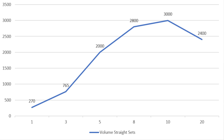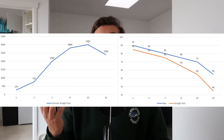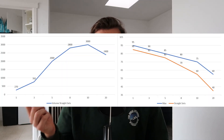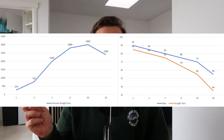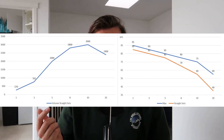A couple of things you notice right away from this graph: volume actually increases going from singles to triples to fives to eights to tens, and then decreases afterwards. Also notice the massive difference in volume between triples and sets of five. To really understand rep ranges you have to take a look at both graphs side by side, and if you do so a few things from my previous videos start to explain themselves.